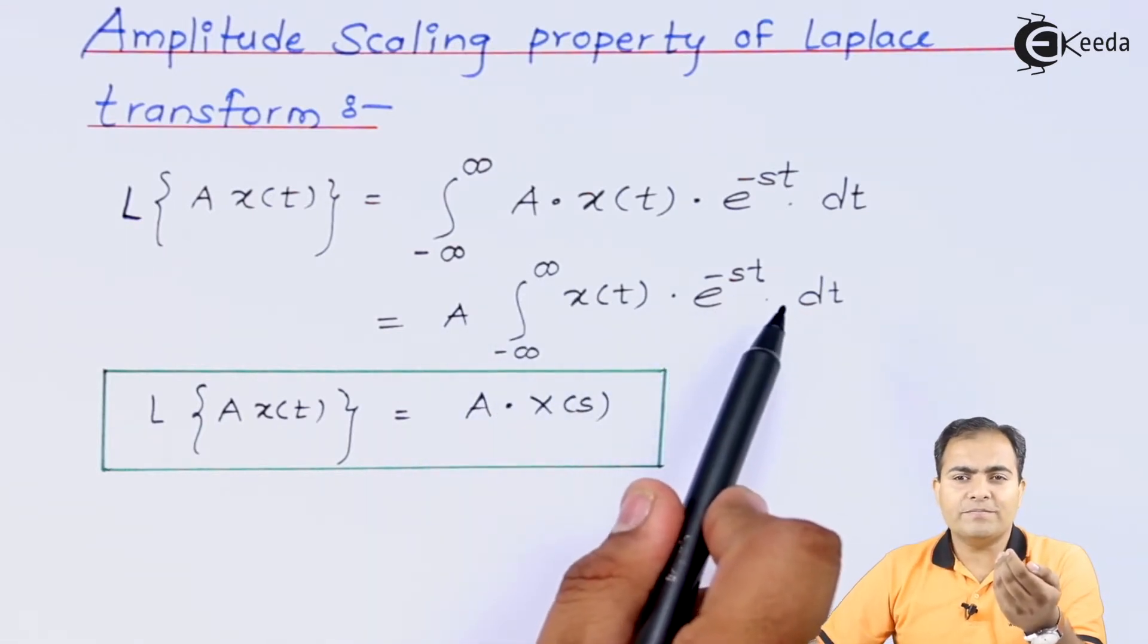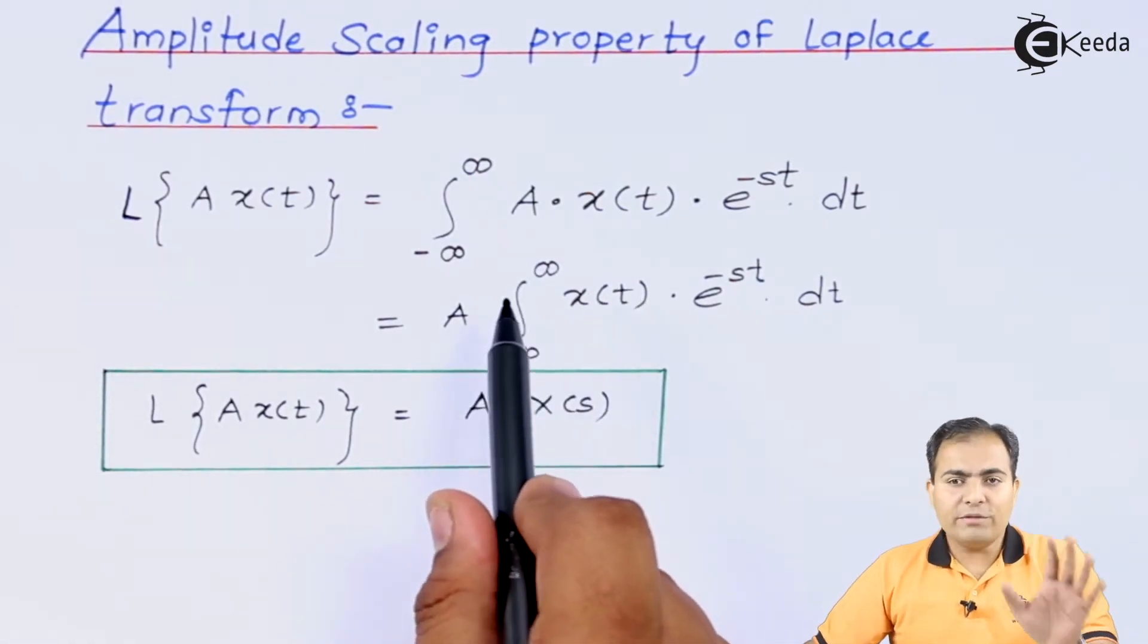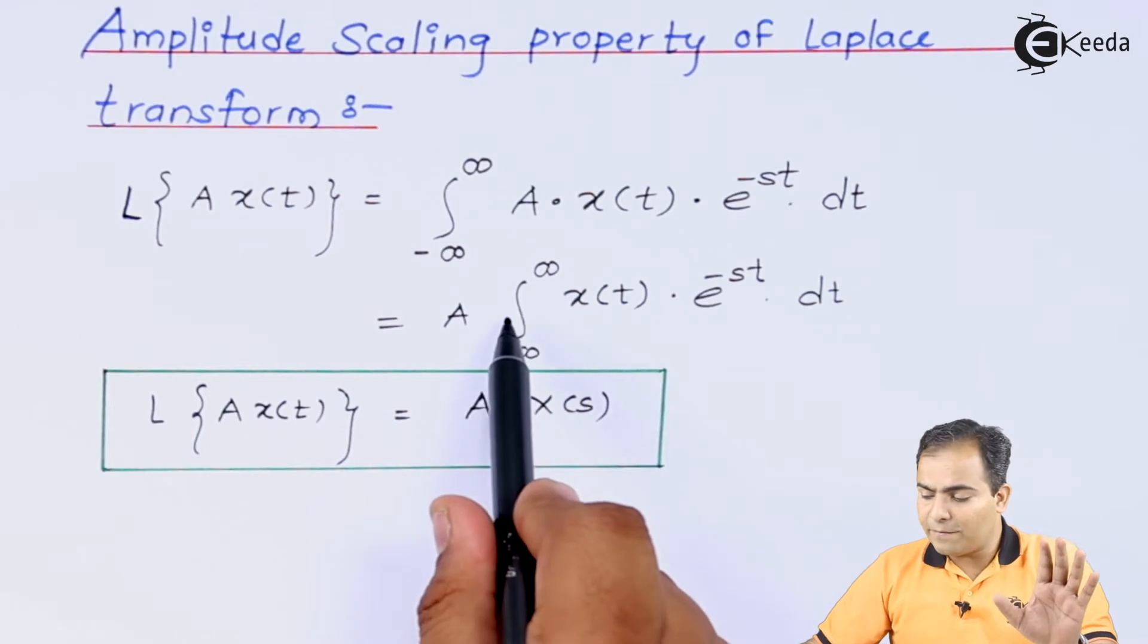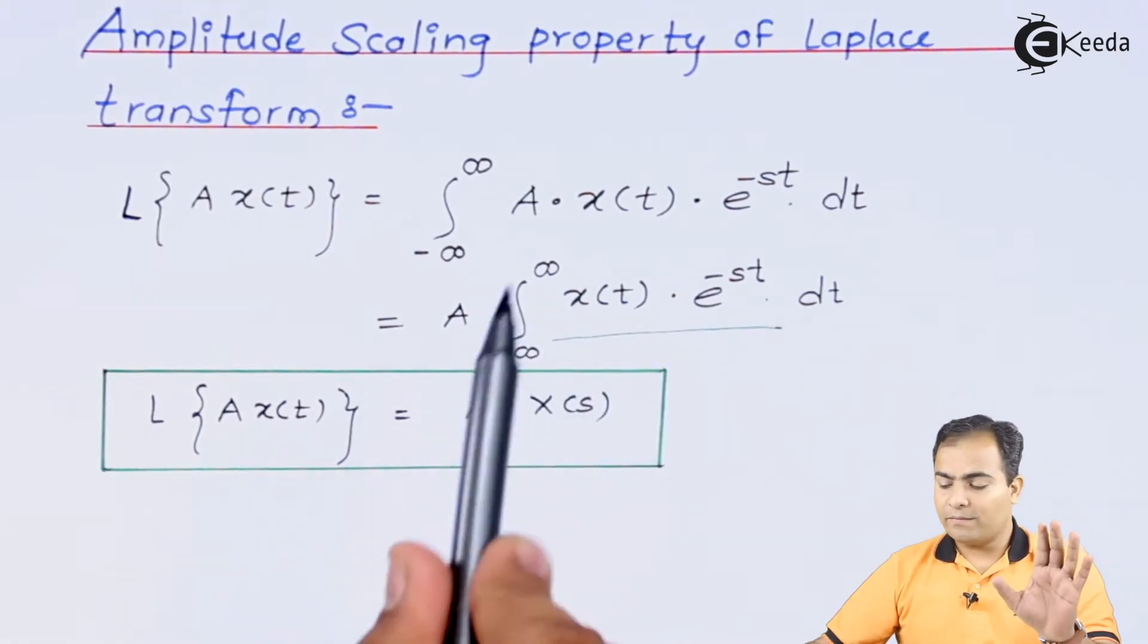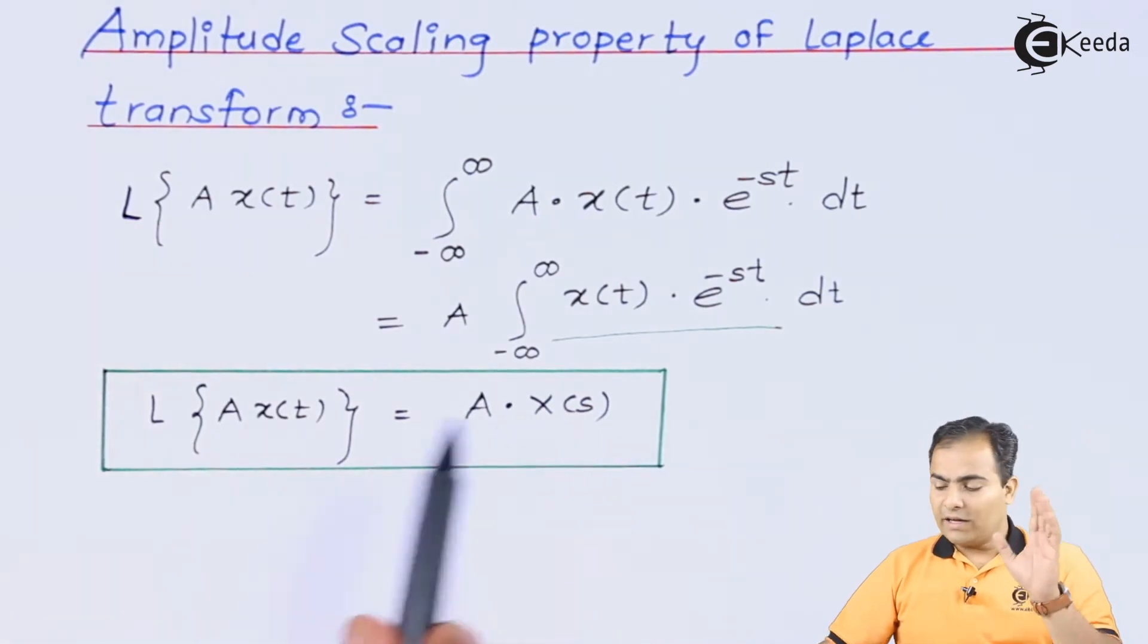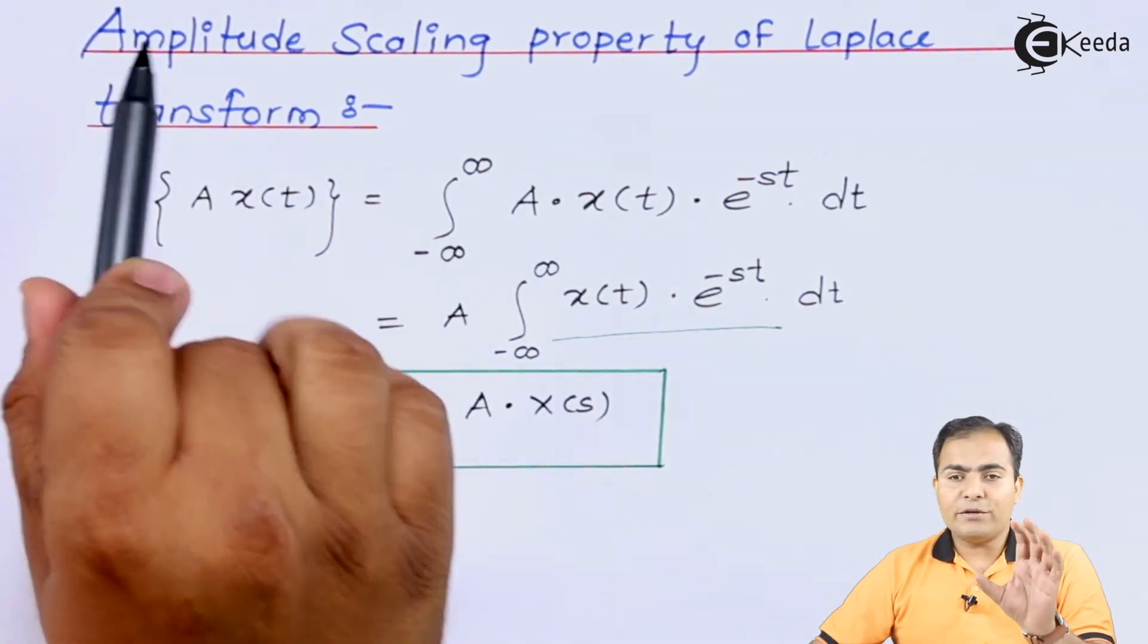Now inside integration what we have? Integration of minus infinity to infinity x of t e to the power minus st dt. And this is nothing but the definition of Laplace transform. So according to or by using the definition of Laplace transform, we can represent all this integration value or all this part by x of s. And this is nothing but the proof.